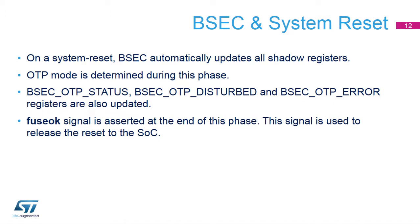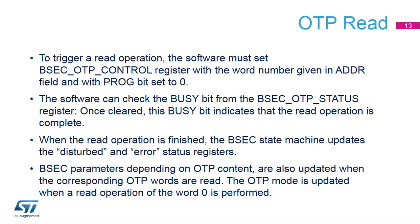To trigger a read operation, the software must set the BSEC OTP control register with the word number given in the ADDR field and with the PROG bit set to 0. The software can check the busy bit from the BSEC OTP status register. Once cleared, this busy bit indicates that the read operation is complete. When the read operation is finished, the BSEC state machine updates the disturbed and error status registers. BSEC parameters depending on OTP content are also updated when the corresponding OTP words are read.